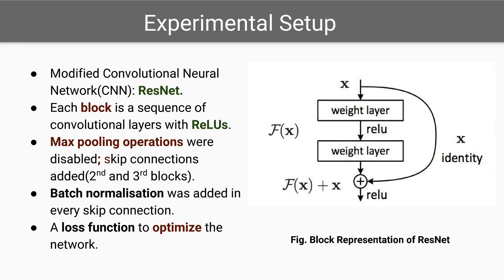The authors trained a modified version of the convolutional network ResNet. The modified network contains blocks, where each block is a sequence of convolutional layers followed by rectified linear units. All max-pooling operations were disabled, and skip connections were added in the second and third ResNet blocks. Batch normalization was added in every skip connection to ensure a common scale, and a loss function was applied to optimize the network while training.